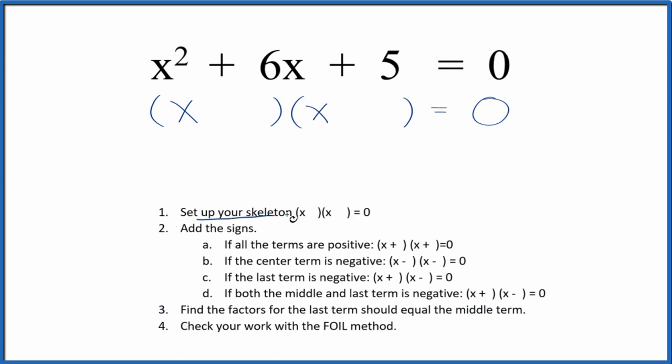First off, we need to write a skeleton equation. And I've already done that right here. Next, we're going to add the signs. So I see I have a positive and a positive. Both terms are positive. We're just going to put positives here in our skeleton.